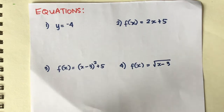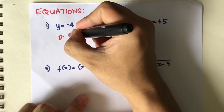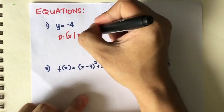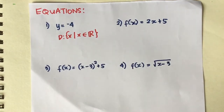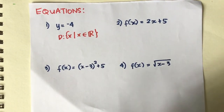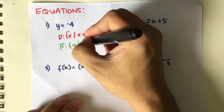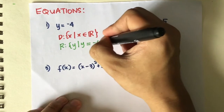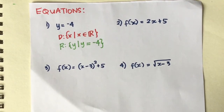Let's look at these given equations. Number one: y is equal to negative 4. We are restricted to get the value of y, so the domain is x such that x is an element of any real number — you can use any values of x. The range is restricted: y such that y is equal to negative 4. This is a many-to-one type of function.